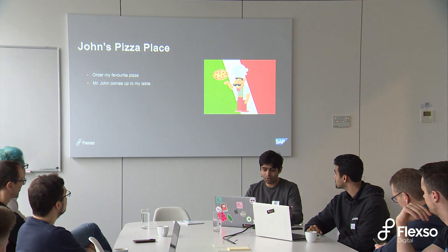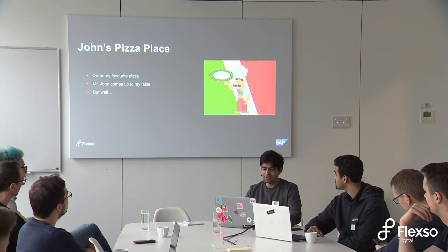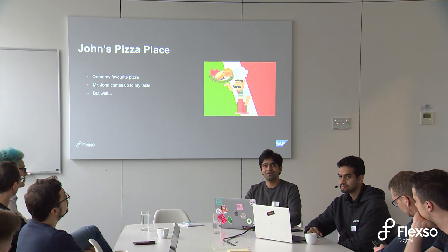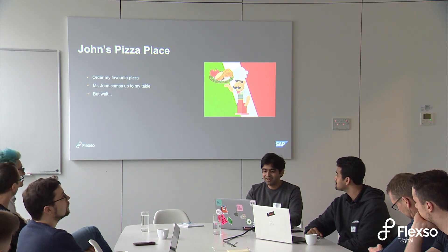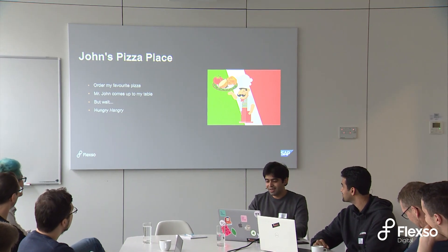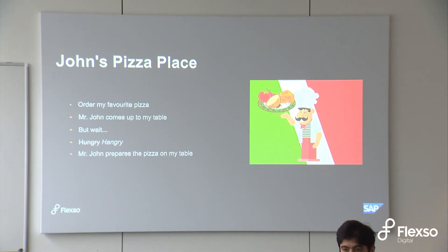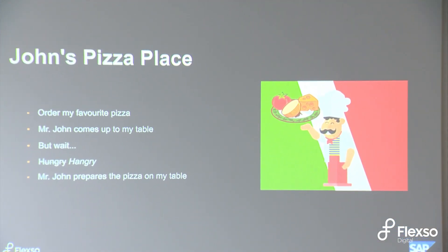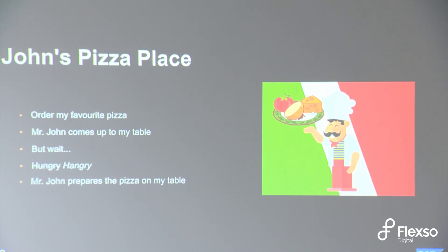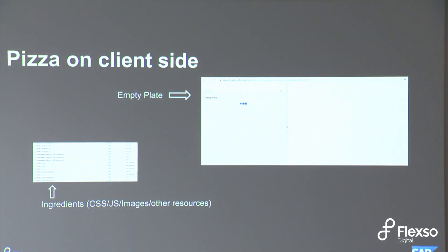I think I'm going to get the pizza I ordered. But wait — there is something strange, because Mr. John comes up with an empty plate. And in that empty plate, I start seeing ingredients of pizza. I start to wonder: am I supposed to make the pizza here, or am I here to eat it? Then something strange happens — I was already hungry, now I'm also angry, so I'm hangry. But suddenly, Mr. John starts to prepare the pizza on my table. It's delicious, I love the pizza. But that part where I was expecting a prepared pizza and instead got ingredients — that wasn't so pleasant. This is an analogy I use to explain how client-side rendering works.